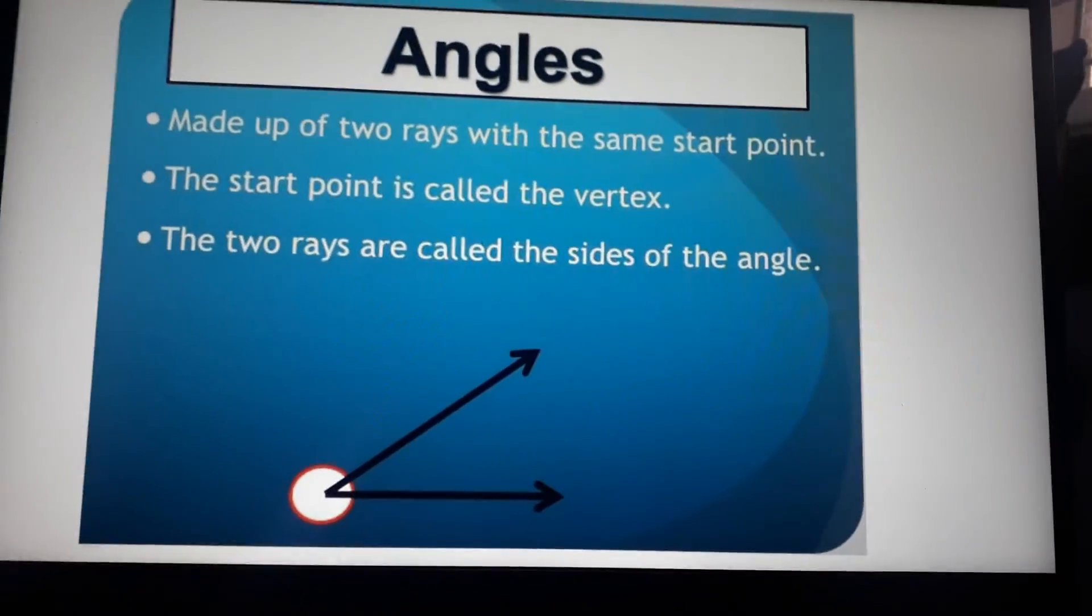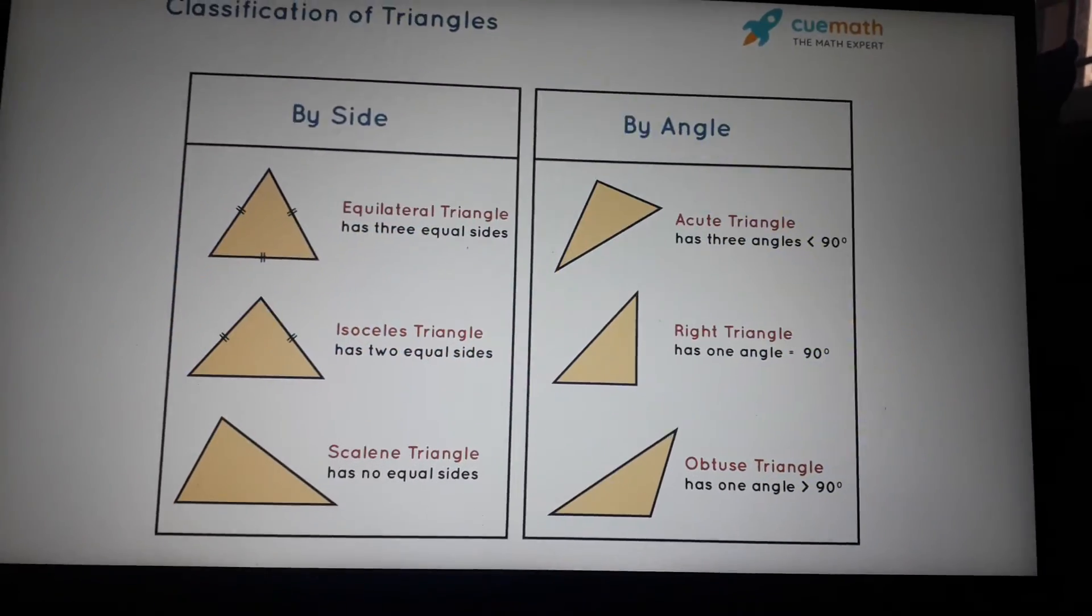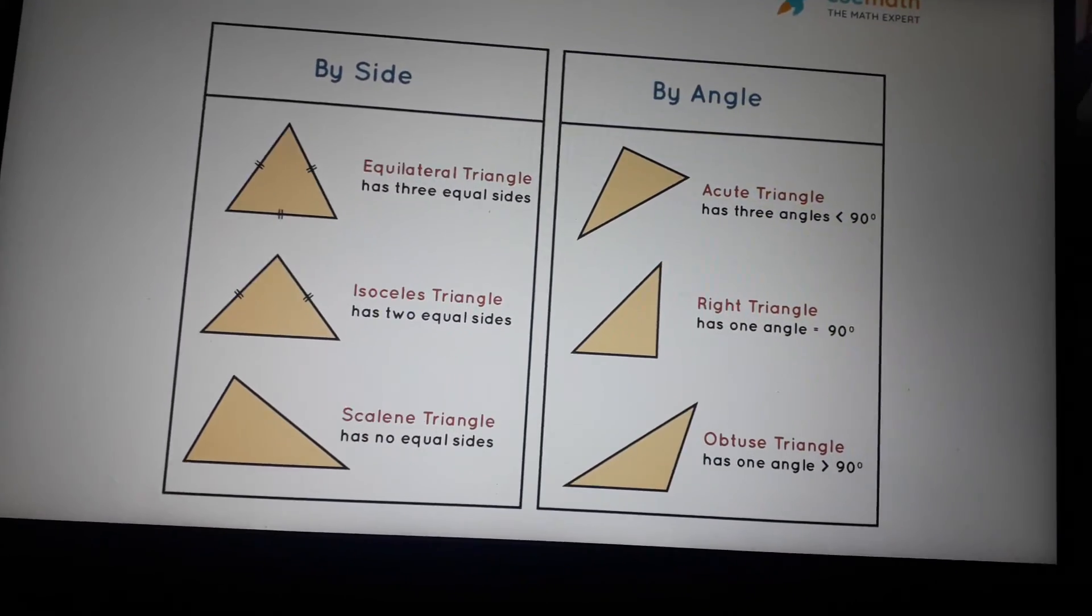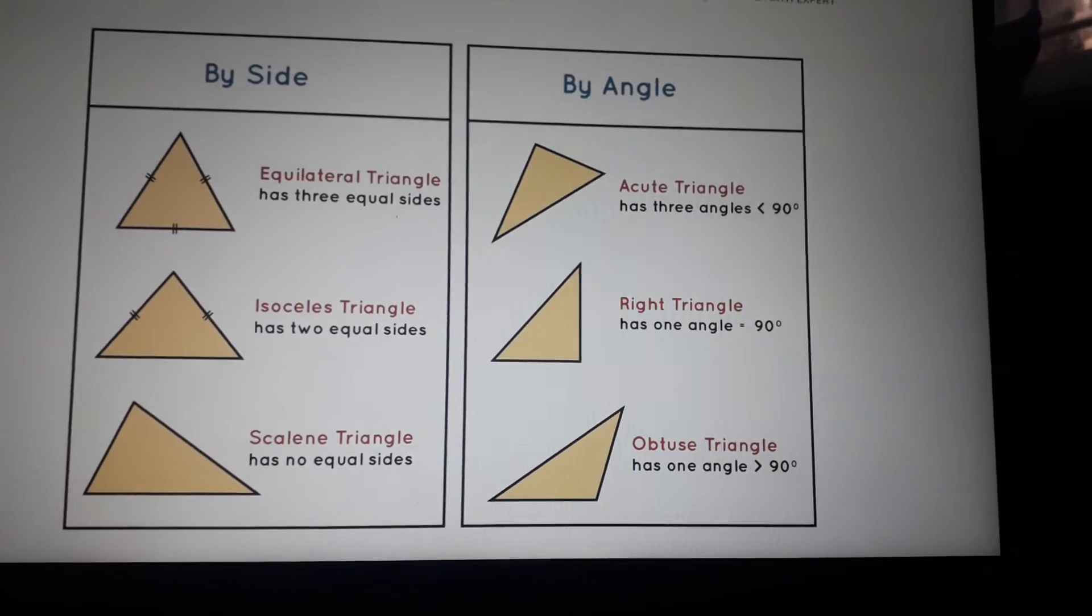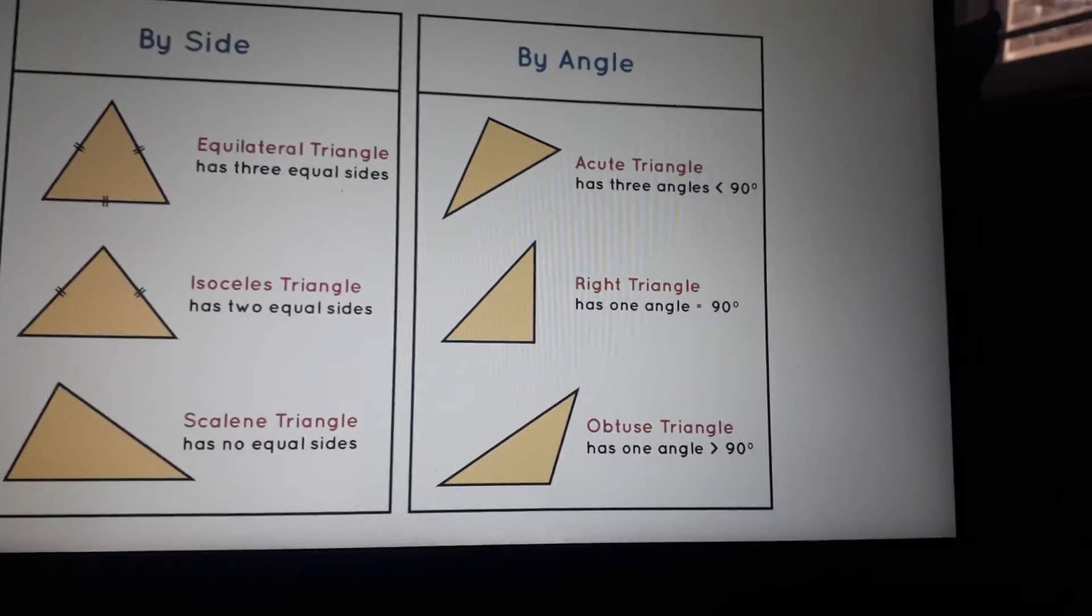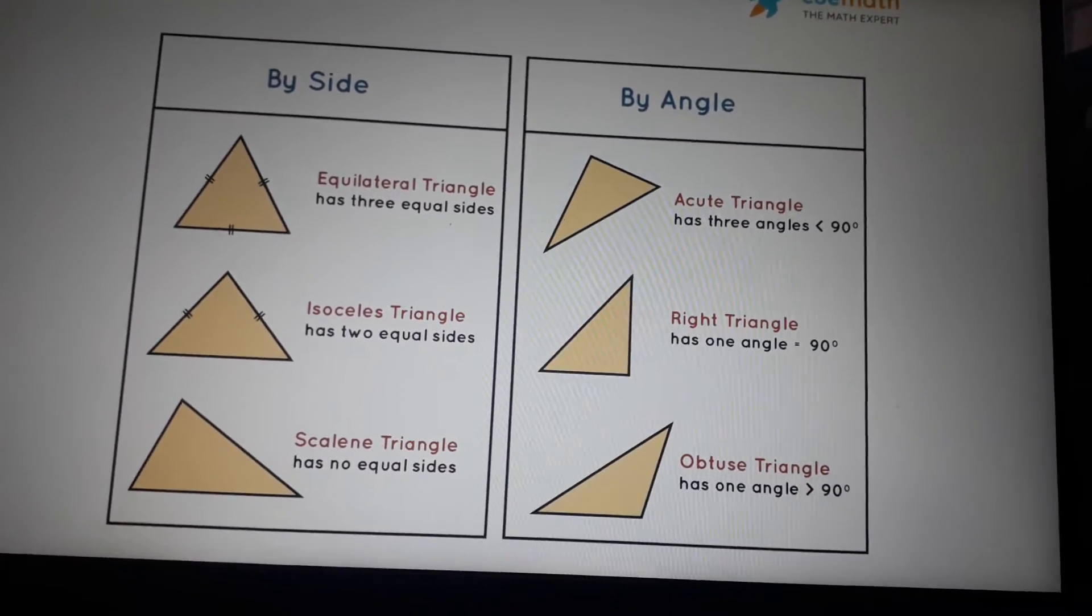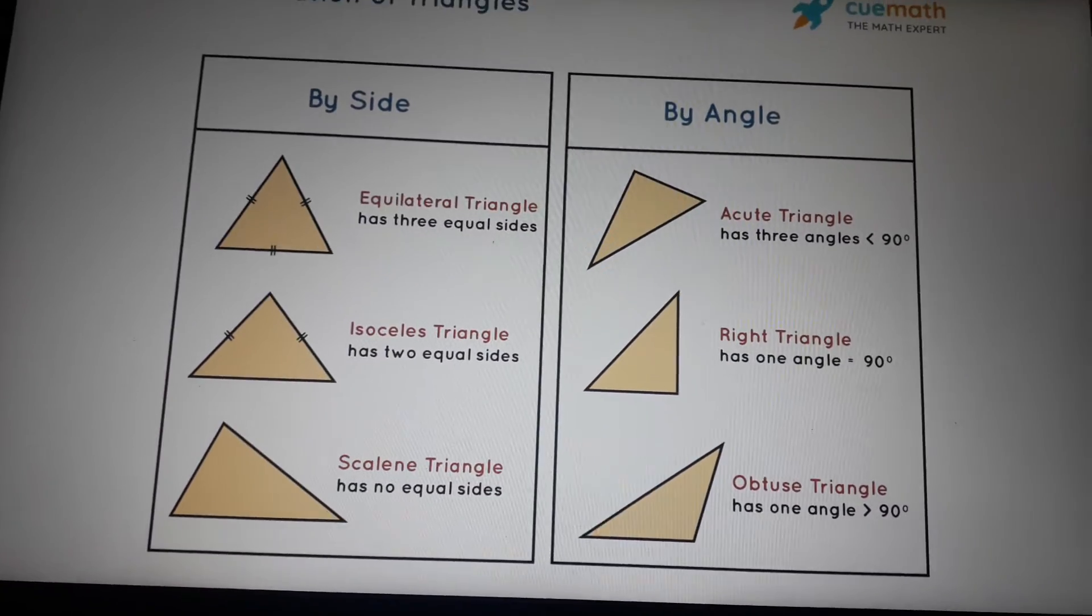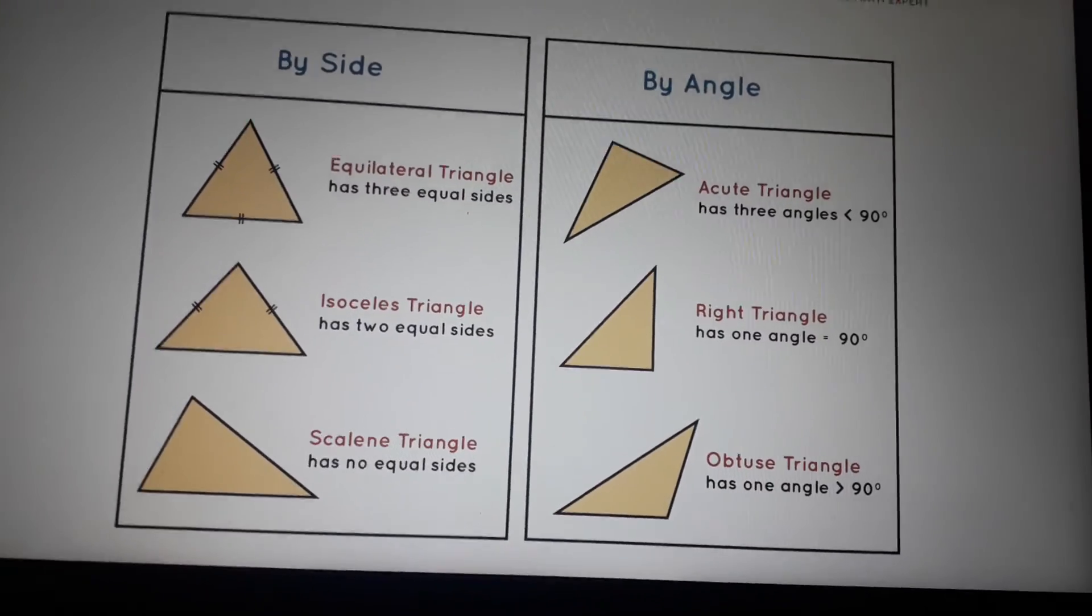Classifications of triangles by side: equilateral has three equal sides, isosceles triangle has two equal sides, scalene triangle has no equal sides. By angle: acute triangle has three angles less than 90 degrees, right triangle has one angle equal to 90 degrees, obtuse triangle has one angle greater than 90 degrees.